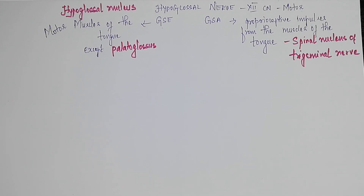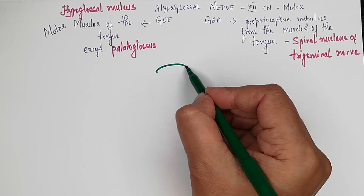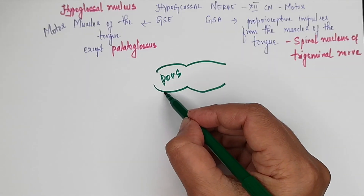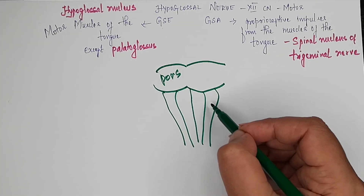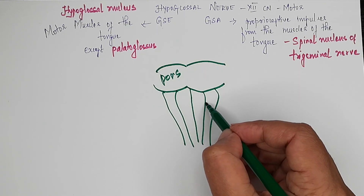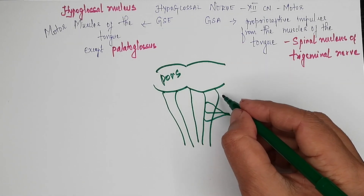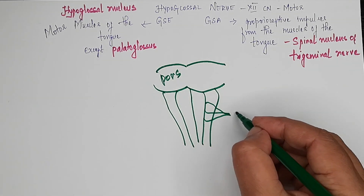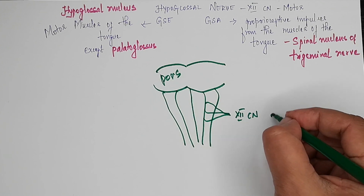Coming to the intracranial course — from where does the hypoglossal nerve arise? The 5th, 6th, 7th, and 8th cranial nerves arise from the pons. When we draw the medulla, only the hypoglossal nerve arises from the anterolateral sulcus. The rest — the 9th, 10th, and 11th cranial nerves — arise posterolaterally.